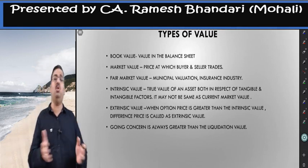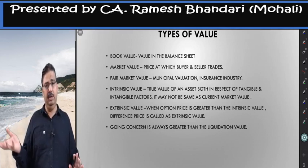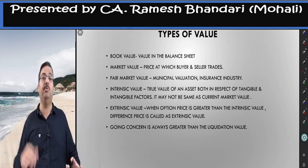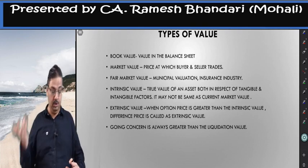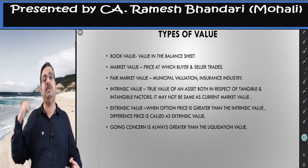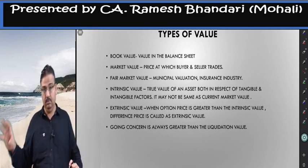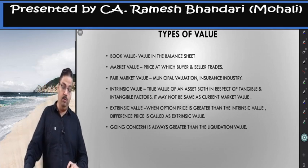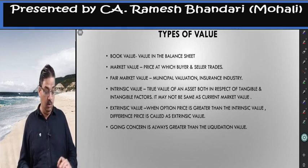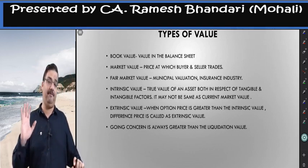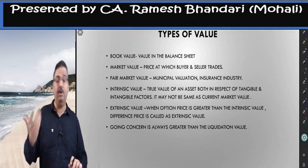Regarding types of value: book value is historical cost in the balance sheet; market value is the price at which buyer and seller trade; fair market value can be as per municipal valuation or insurance industry; fair value is separately defined in Ind AS 113; intrinsic value is the true value of an asset considering both tangible and intangible factors; extrinsic value is when the option price exceeds intrinsic value; going concern value is always higher than liquidation value since a continuing business is worth more than a forced sale.